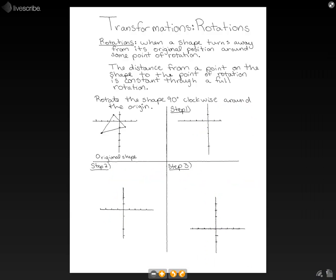This video is about transformations, and specifically rotations. A rotation is when a shape turns away from its original position around some point of rotation. One interesting thing to know is that the distance from a point on the shape to the point of rotation is constant throughout a full rotation. So no matter how many degrees it rotates by, that distance will always stay the same.